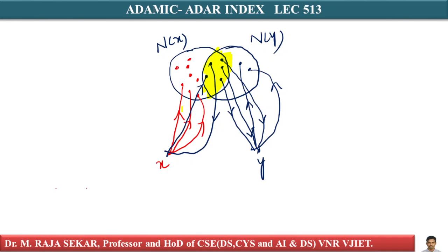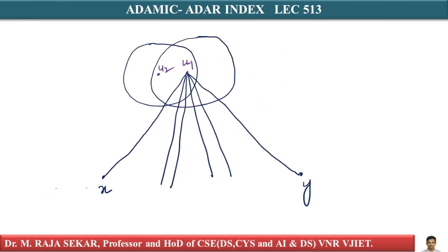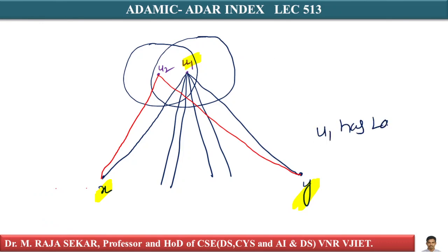Let's assume there is some intersection. U1 is connected to both X and Y. Now, if U1 has a very large neighborhood — that is, so many other persons are also following U1 — that becomes important here. Compare this with U2, which has a small neighborhood. The difference between U1 and U2 is that U1 has a large neighborhood and U2 has a small neighborhood. This point is important.